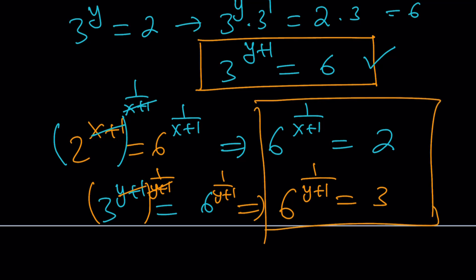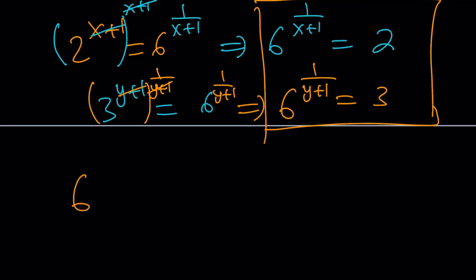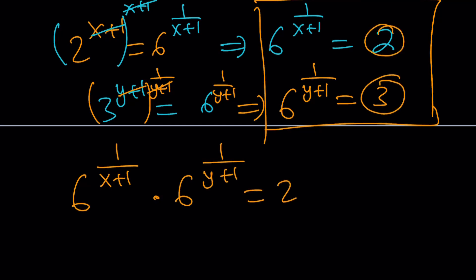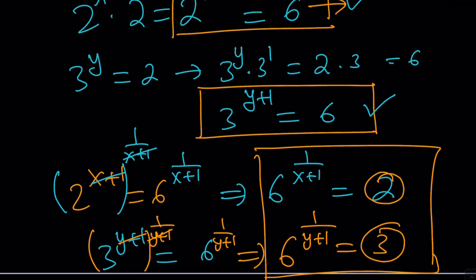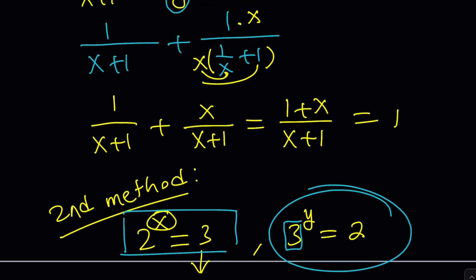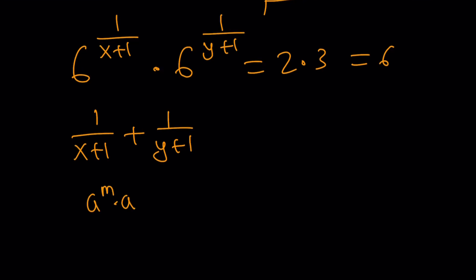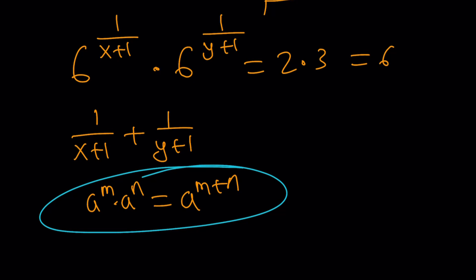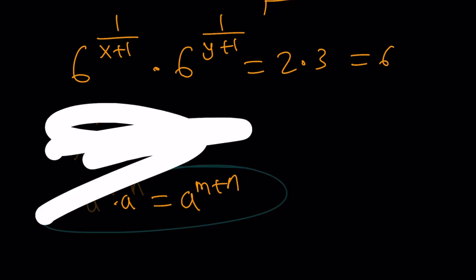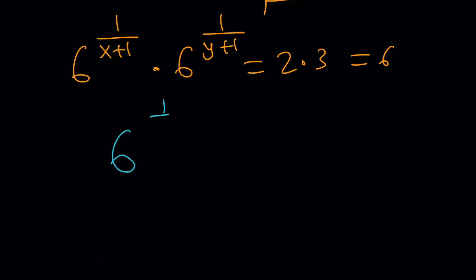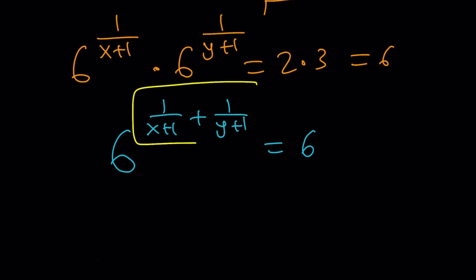Now these two exponentials have the same base, so I can multiply them. 6 to the power 1 over x plus 1 times 6 to the power 1 over y plus 1 equals 2 times 3, which is 6. The idea is that when you multiply two powers with the same base, you add the exponents. So this gives us 6 to the power of 1 over x plus 1 plus 1 over y plus 1 equals 6. This means the exponent equals 1, and that's the answer we were looking for.